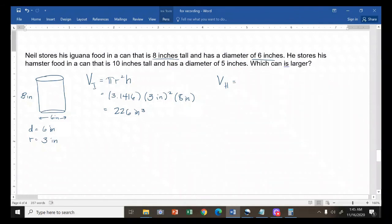Now, let's compute the volume of the hamster can. For the volume of the hamster can, same formula, pi r squared h. That's 3.1416. But this time, the radius given—we have a diameter here.